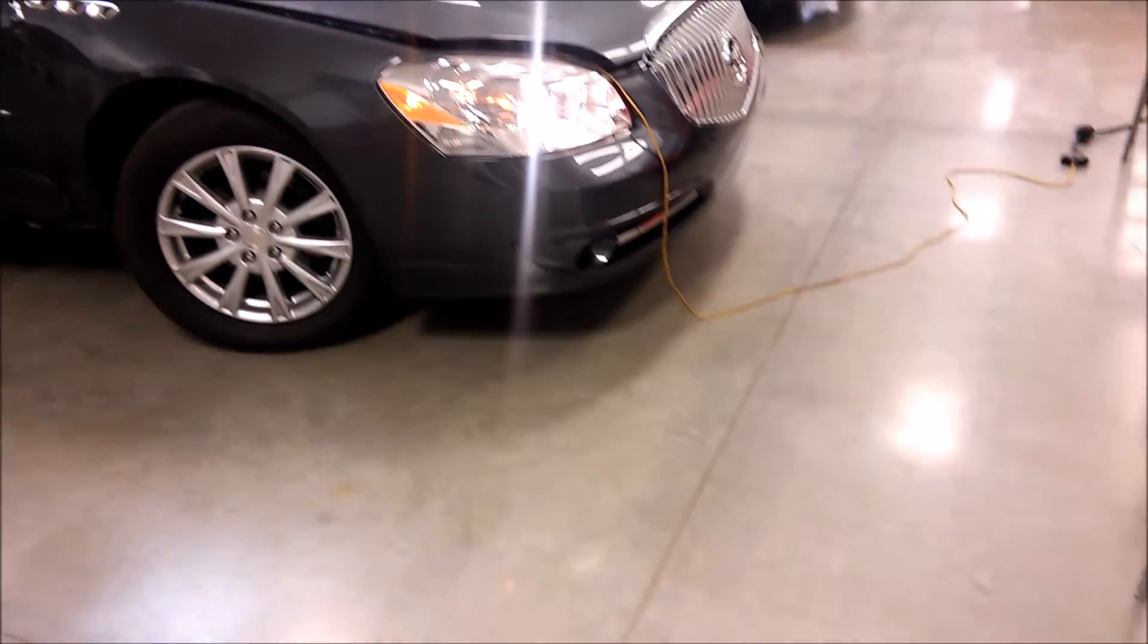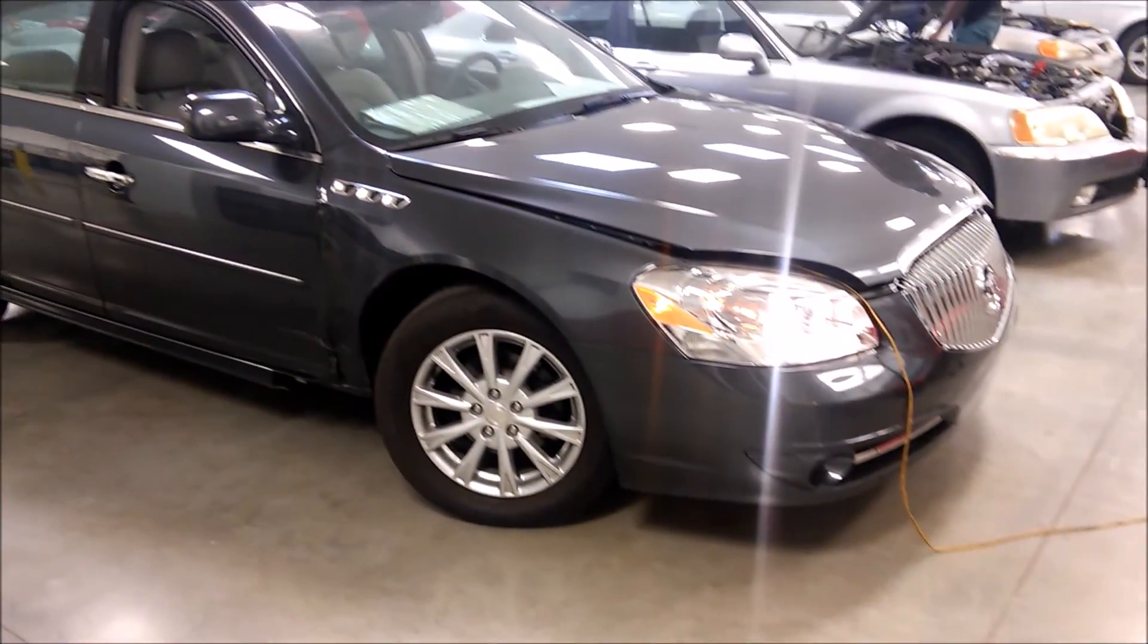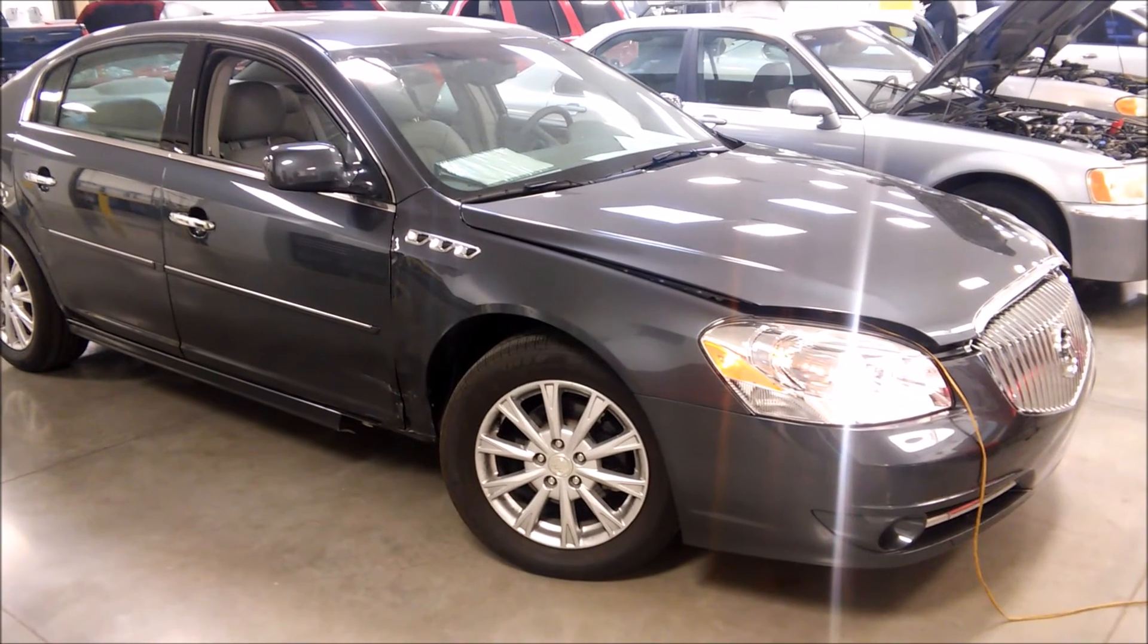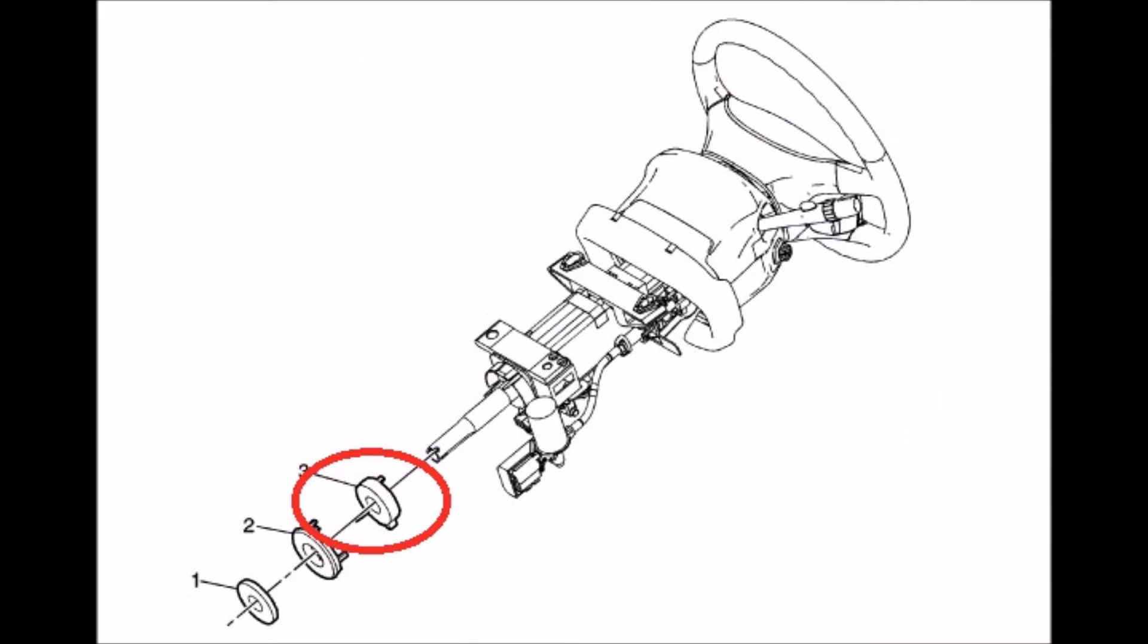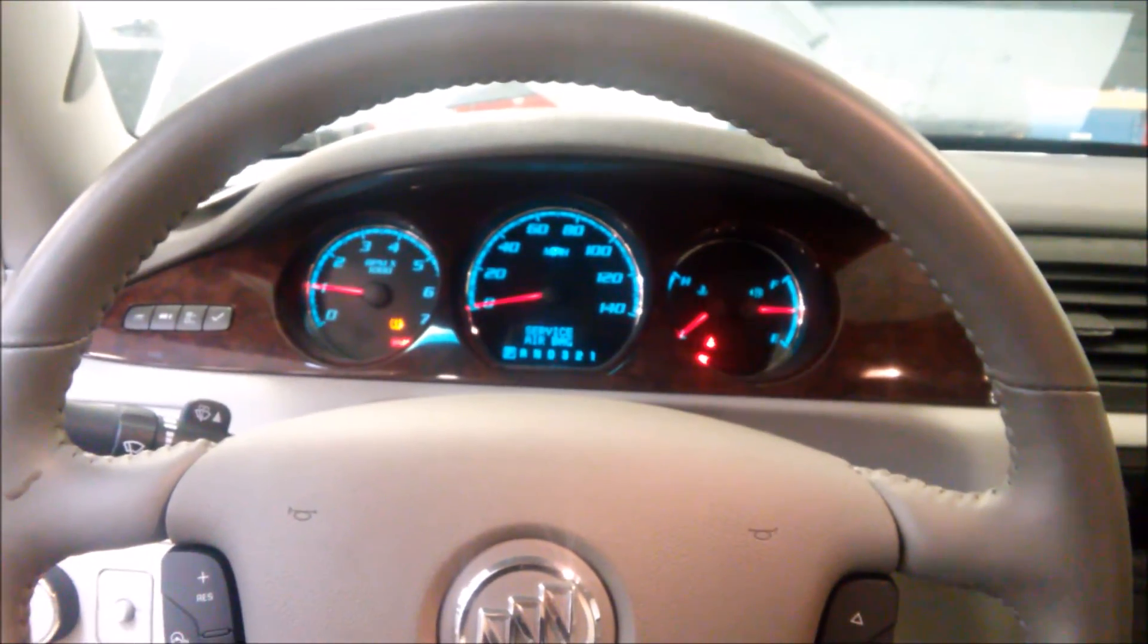Now let's take a look at what a steering angle sensor looks like electrically with this 2011 Lucerne. In this vehicle, the steering angle sensor is located in the back of the steering column. I now have a scan tool hooked up to this Buick Lucerne. Let's see what we got.